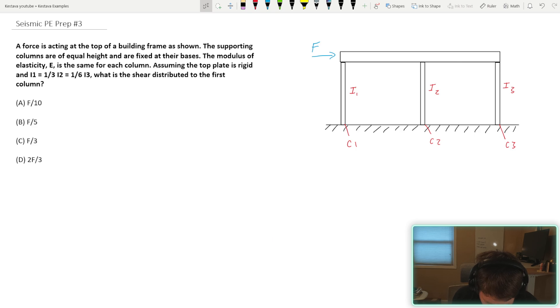A force is acting at the top of a building frame as shown, as you can see on the right. The supporting columns are of equal height and are fixed at their bases. The modulus of elasticity E is the same for each column.